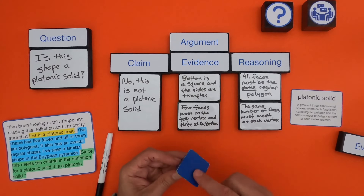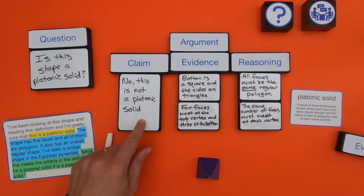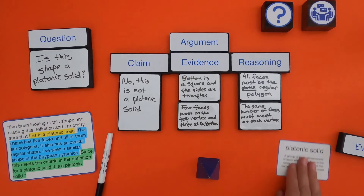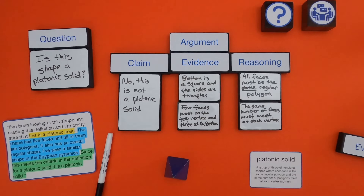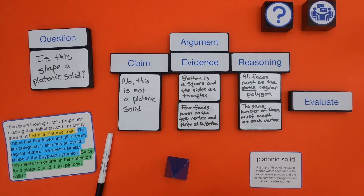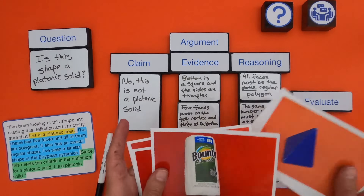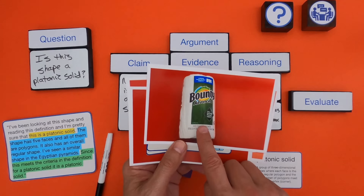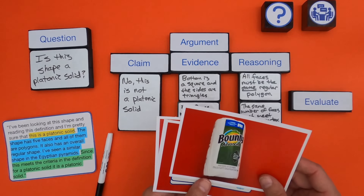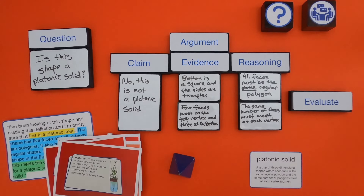What might be a platonic solid is a cube, because it has squares on all sides with the same number meeting at each vertex. When evaluating someone's argument, always figure out what question they're really trying to answer, what their claim, evidence, and reasoning are, and then see how definitions or additional evidence help you evaluate it. It's not a fight — it's just looking at the evidence and reasoning to see if we can convince somebody of the answer. I've got another couple of arguments for you to try: one about Bounty paper towels and one about where materials in a plant come from.